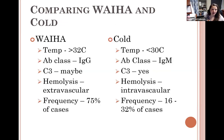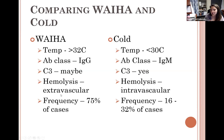Warm autoimmune hemolytic anemia antibodies react at greater than 32 degrees Celsius — inside the patient's body at 37 degrees. Typically they are IgG classification; some can activate complement, but usually it's just IgG, causing extravascular hemolysis — cell destruction occurring inside the spleen. Cold antibodies react at 30 to 32 degrees, occurring as blood circulates away from the core to the extremities — fingers and toes. Cold antibodies are typically IgM, which is why they interfere with ABO testing. A key characteristic of IgM is its ability to initiate complement, potentially causing intravascular hemolysis.